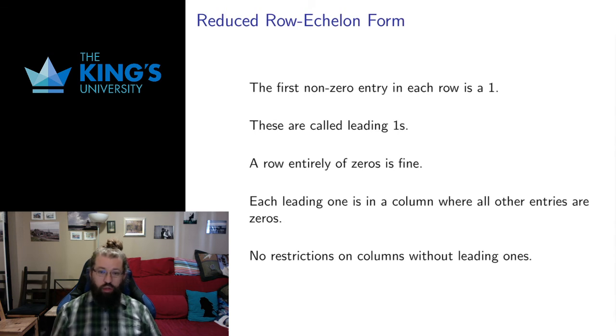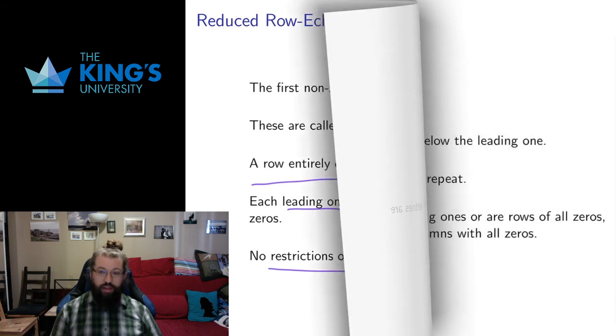We're going to use row operations to turn matrices into this form. So in reduced row echelon form, each row, the first non-zero entry, starting from the left, the first non-zero has to be a 1. These are called leading 1s. If a row is all 0s, that's fine. It doesn't have any first non-zero entries, so it won't have a leading 1. But all other rows, the first thing we go from the left that we hit in a row has to be a 1. Each leading 1 has to be in a column where all other entries are 0. So above and below the leading 1, we need 0s. If I have a column without a leading 1, I've got no restrictions on it. So if all of these things are true, we have a matrix that's called reduced row echelon form, and that's going to be our goal.